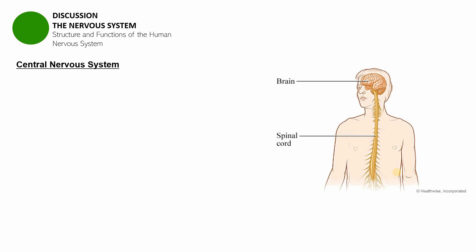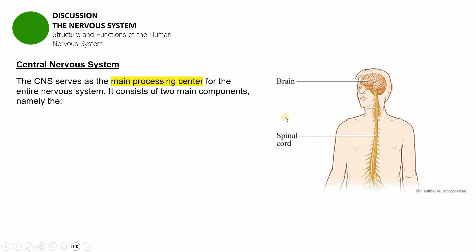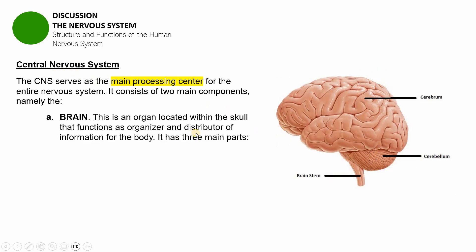The nervous system is divided into two parts. The first part is the central nervous system, which serves as the main processing center for the entire nervous system. It consists of two main components. The first component is the brain — an organ located within and protected by the skull. It functions as the organizer and distributor of information for the body, and is subdivided into three main parts.